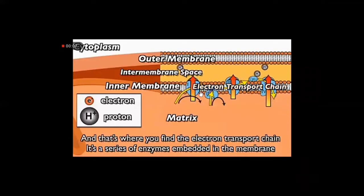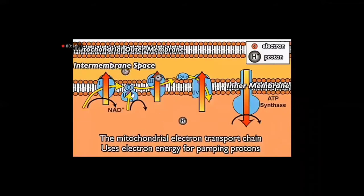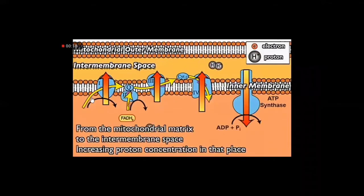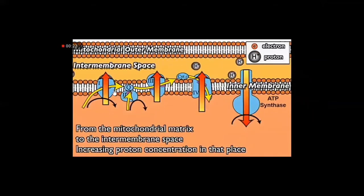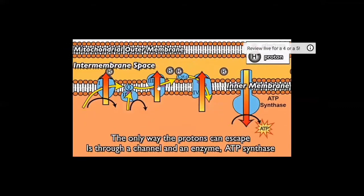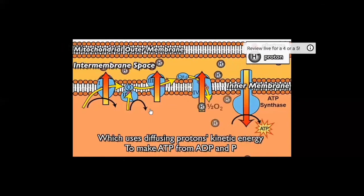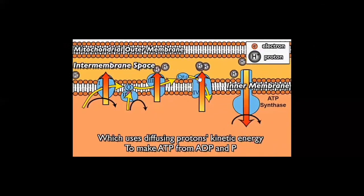The electron transport chain and oxidative phosphorylation take place inside the inner mitochondrial membrane. The electron transport chain is located in the inner mitochondrial membrane. When electrons are transported in the electron transport chain, hydrogen ions are pumped out from the matrix to the intermembrane space.